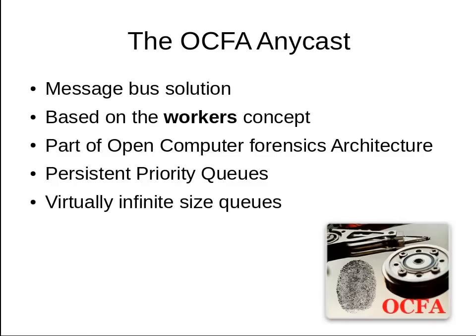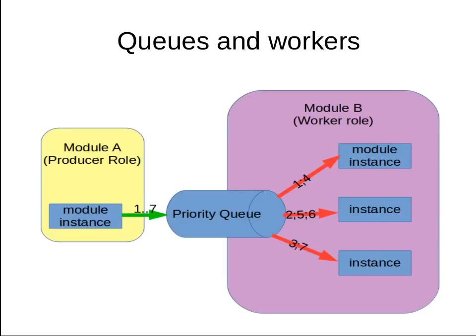Let's start off by looking at the OCFA Anycast. The Anycast was a message bus solution, kind of like RabbitMQ but geared solely towards the worker concept. It was part of a computer forensic framework named the Open Computer Forensic Architecture, or OCFA for short. It used the concept of persistent priority queues that for all intent and purposes were infinite in size — a property that we later found out had some drawbacks. Module instance processes would put jobs into a priority queue, and a module instance in its role as worker would be a consumer of entities from those queues, effectively load-balancing between different instances potentially running on different servers.